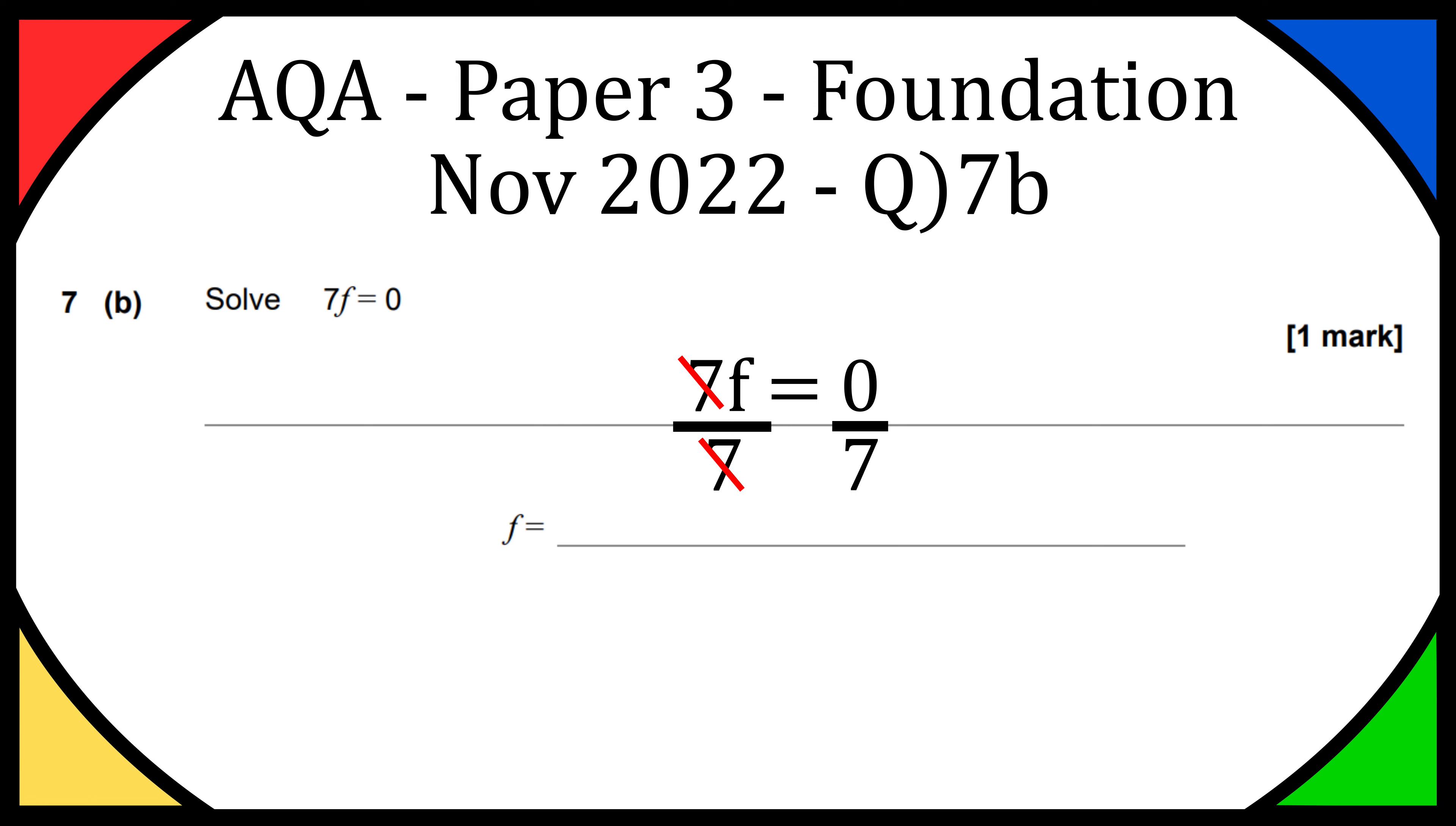So we have f on the left hand side and on the right hand side we have 0 divided by 7. Now when you divide 0 by anything it is just 0. So 0 divided by 7 is going to be 0.